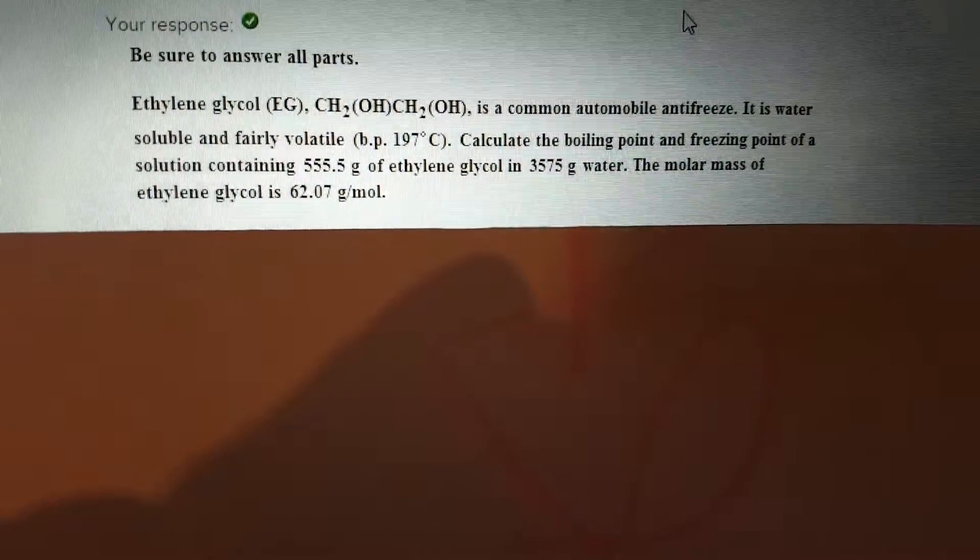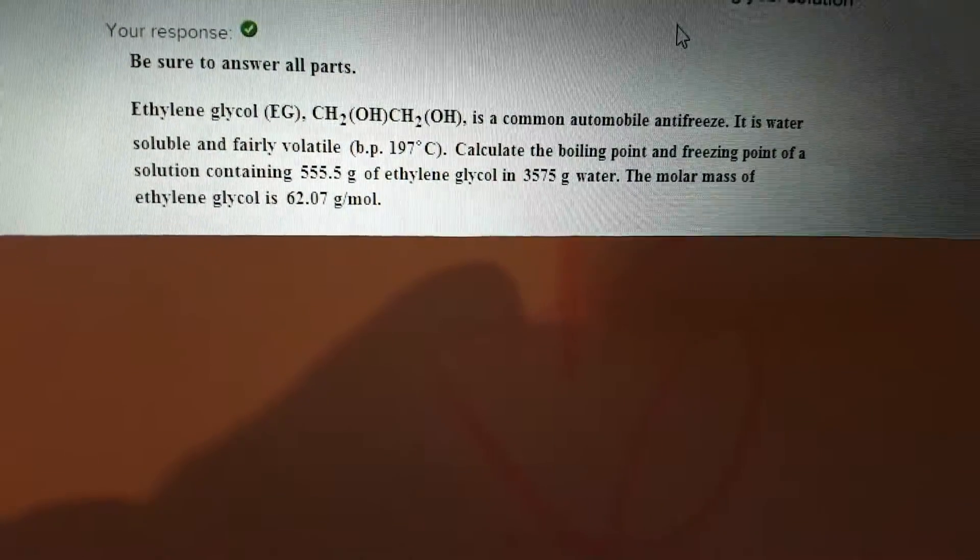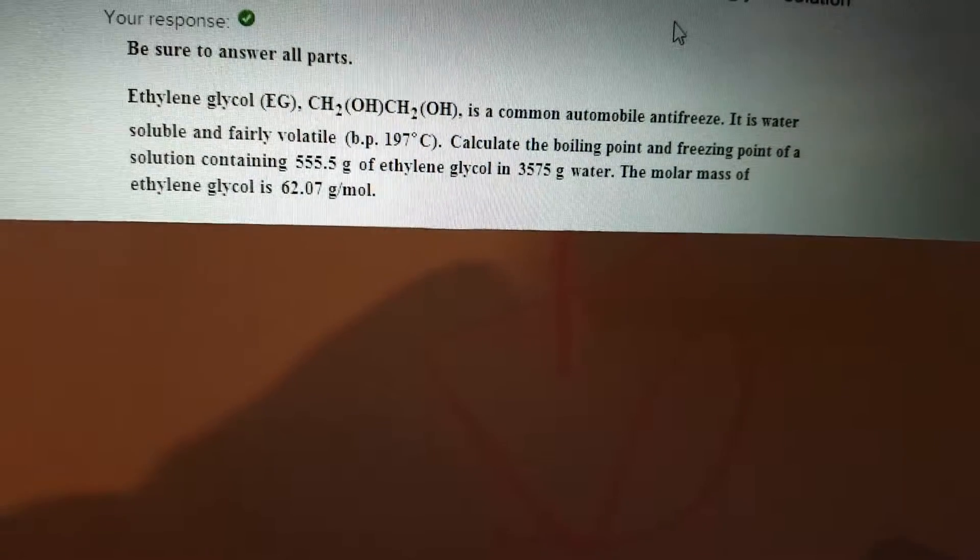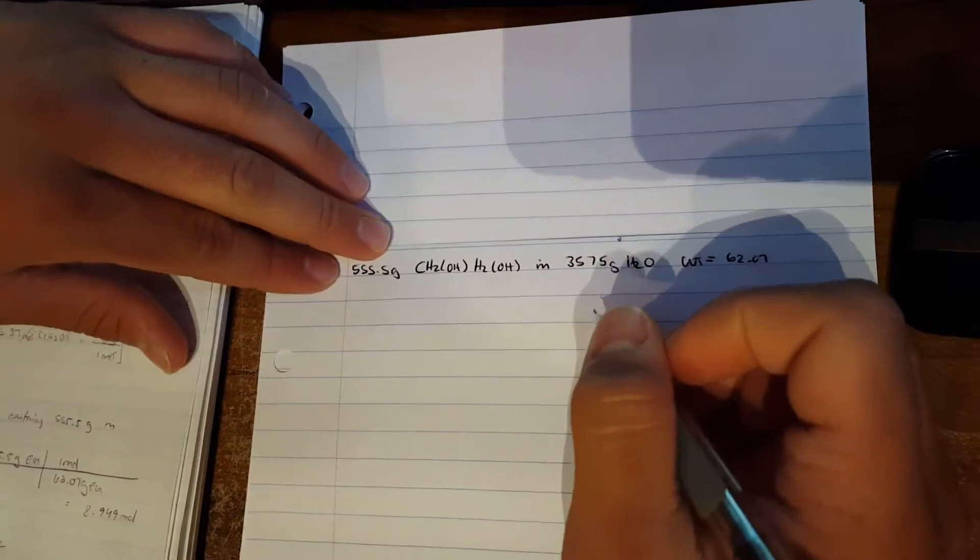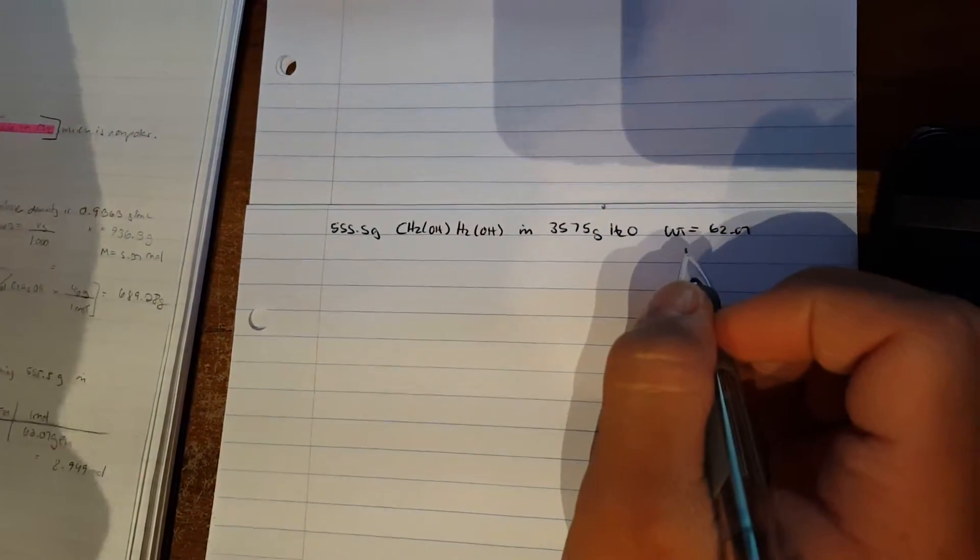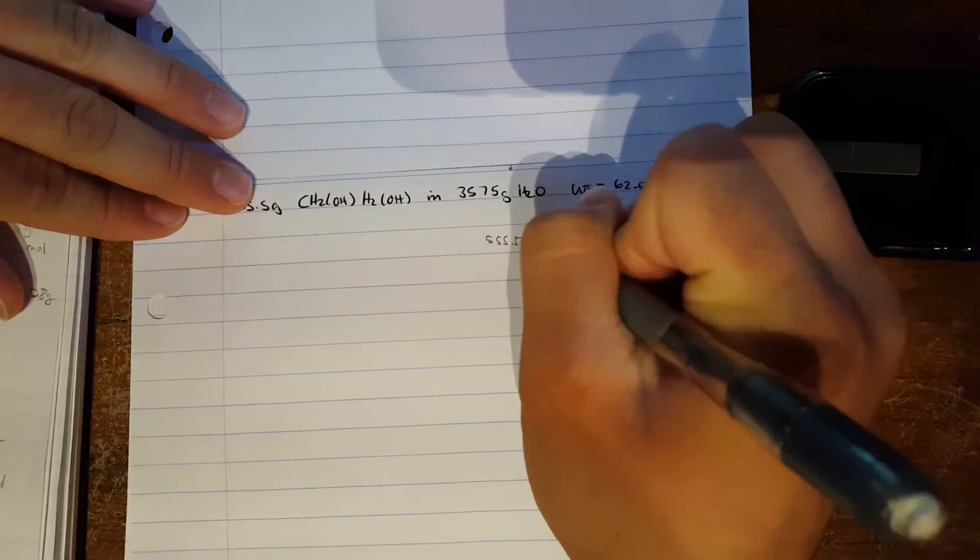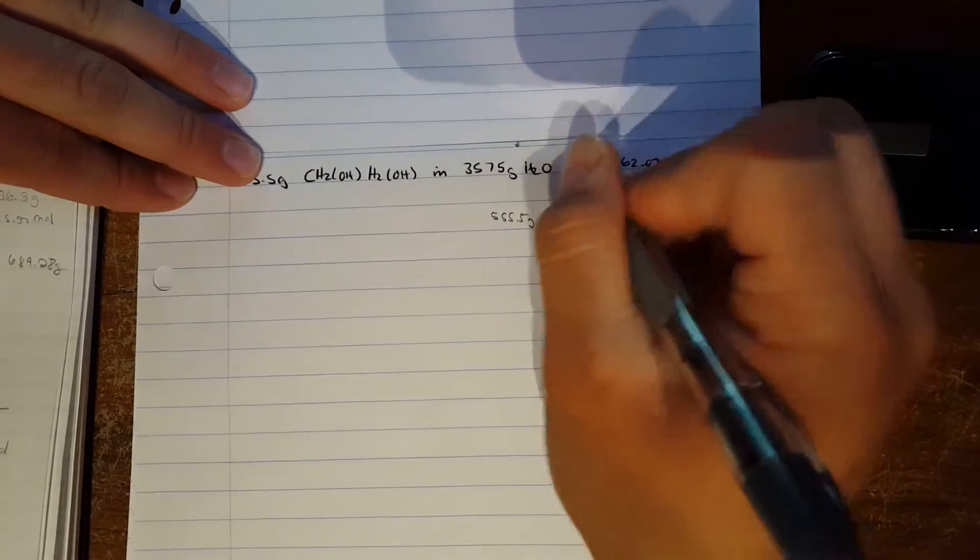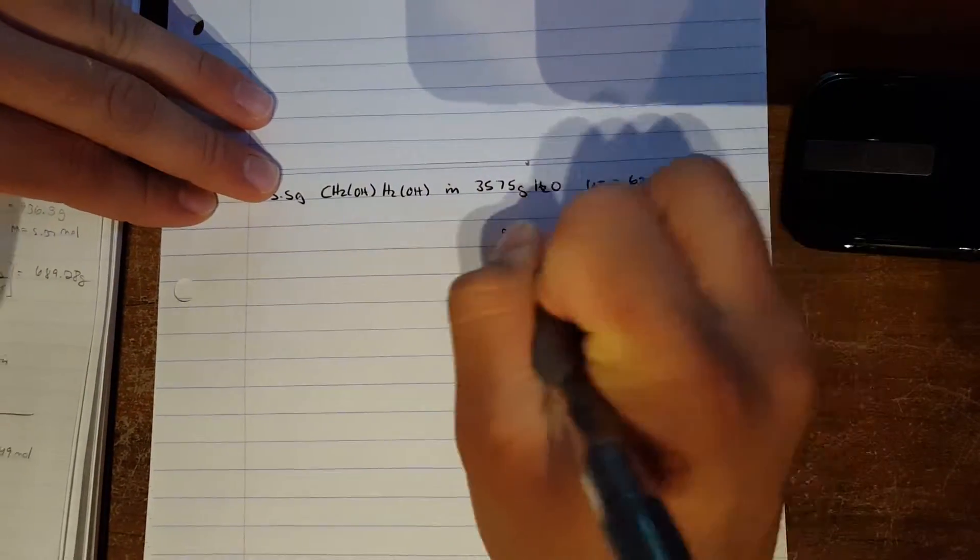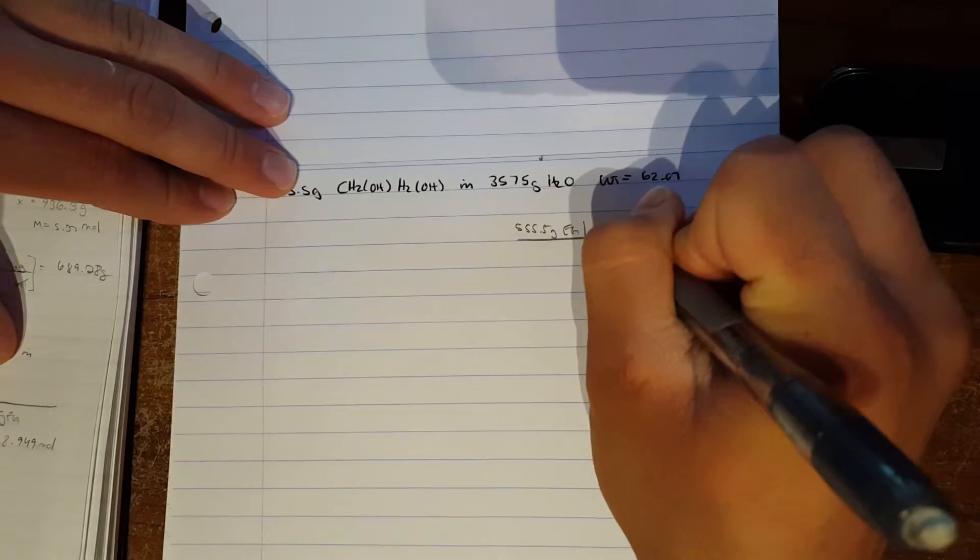It gives us a molar mass of ethylene glycol which is 62.07 grams per mole. So to start off, we have 555.5 grams of ethylene glycol. We convert this to moles.